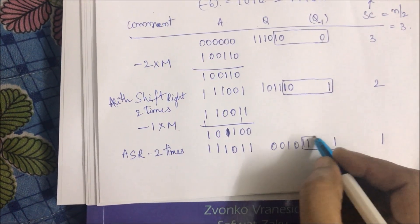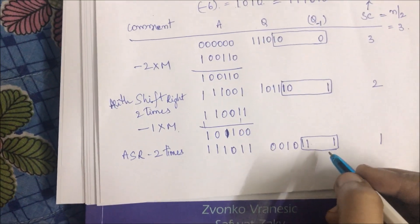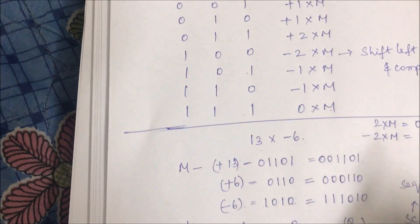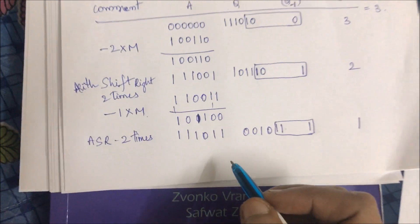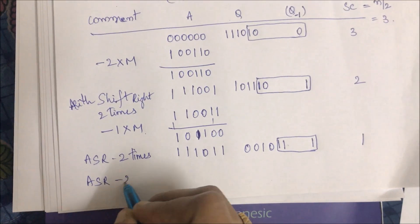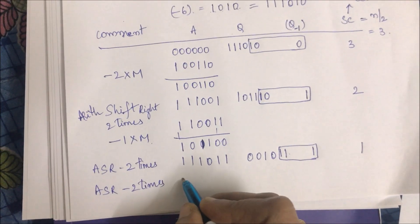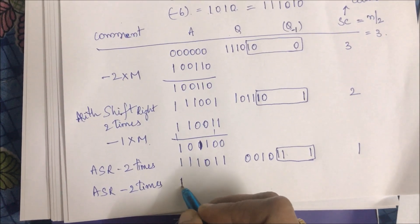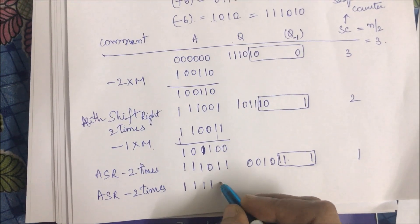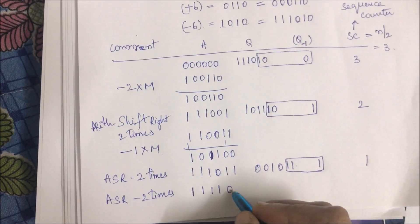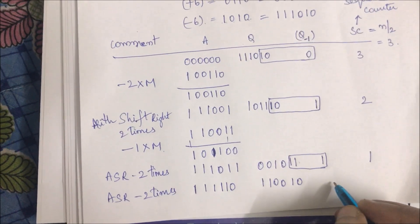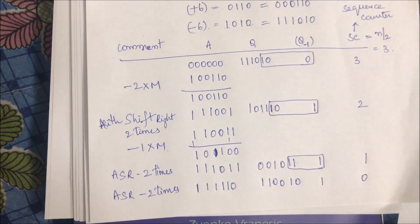After the addition, perform arithmetic shift right by 2 bits again. Decrement the sequence counter to 1. Checking the next 3-bit combination, we have 1,1,1 which from the table equals 0×m, meaning we need not add anything to A. We simply shift right 2 times. In arithmetic shift right, the sign bit is preserved as we shift.